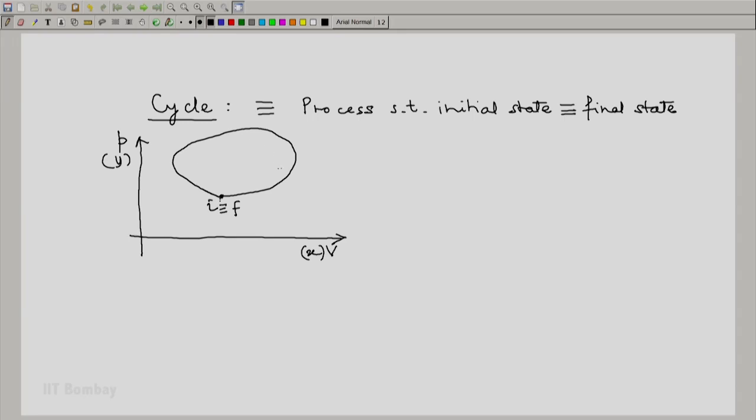This is the depiction of a quasi-static cycle, so let me label it as A. So, A is a quasi-static cycle.